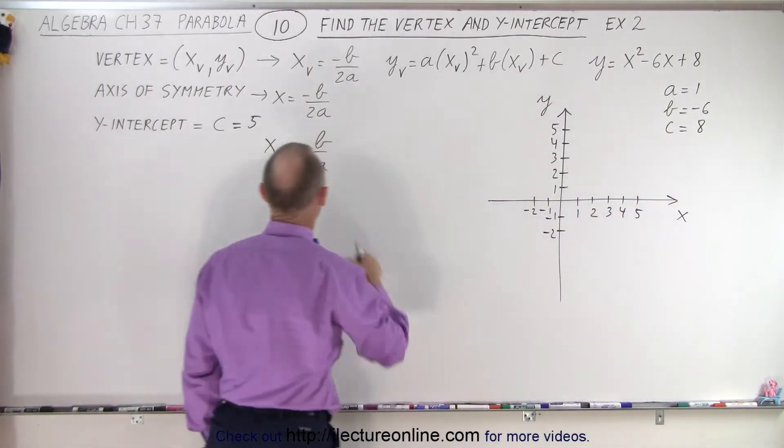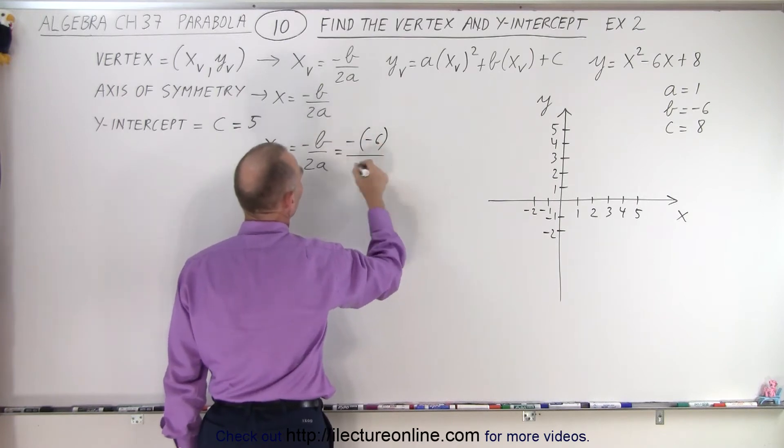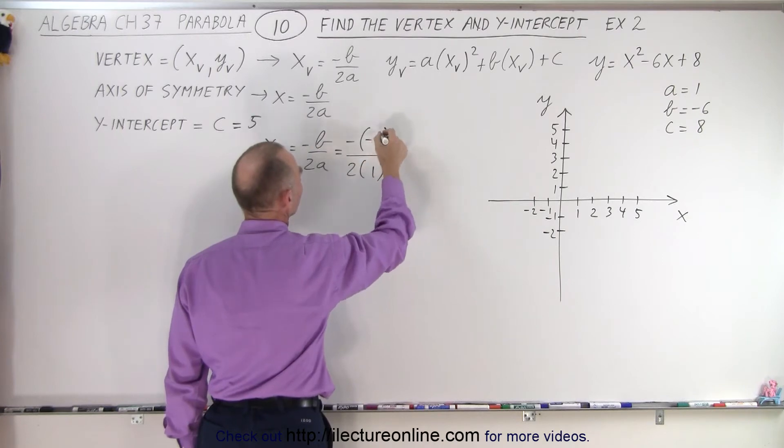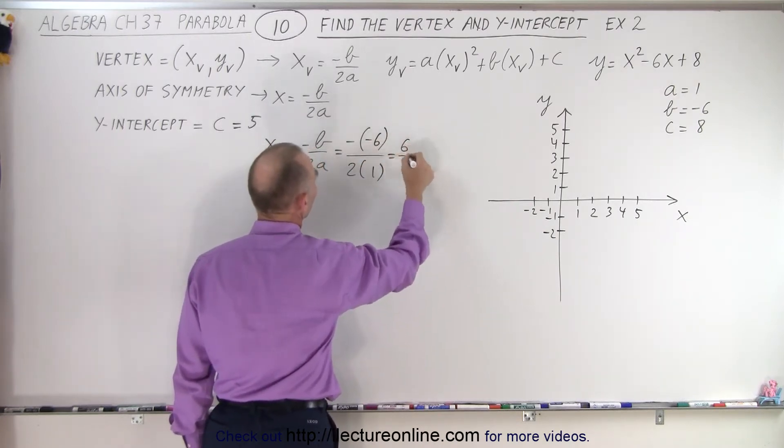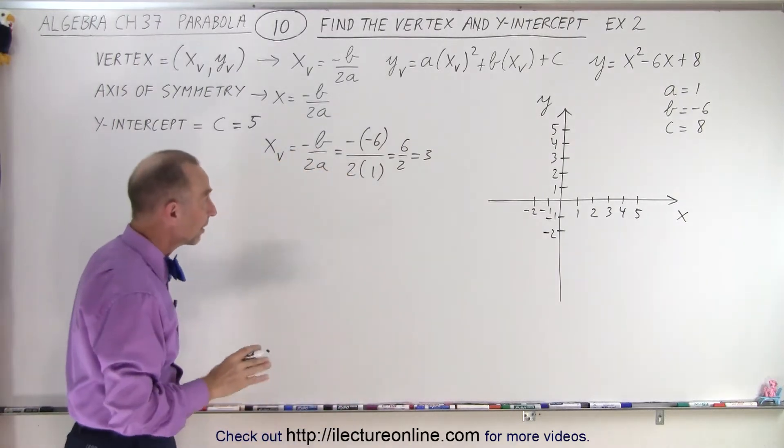So in this case, minus b is going to be minus times a minus 6 divided by 2 times 1. This should be a 6 here, it doesn't look like a 6. So this becomes 6 divided by 2, which is equal to 3. It means the x-coordinate of the vertex is equal to 3.